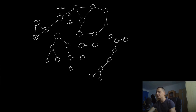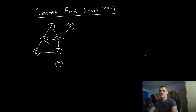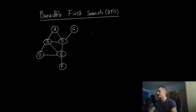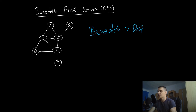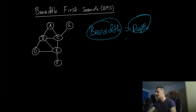Now we're going to get into the searching algorithms. Let's start with the so-called Breadth First Search, or BFS. Essentially what we're doing here is preferring breadth over depth, which means that when we're traversing this graph we prefer going wide before going deep.